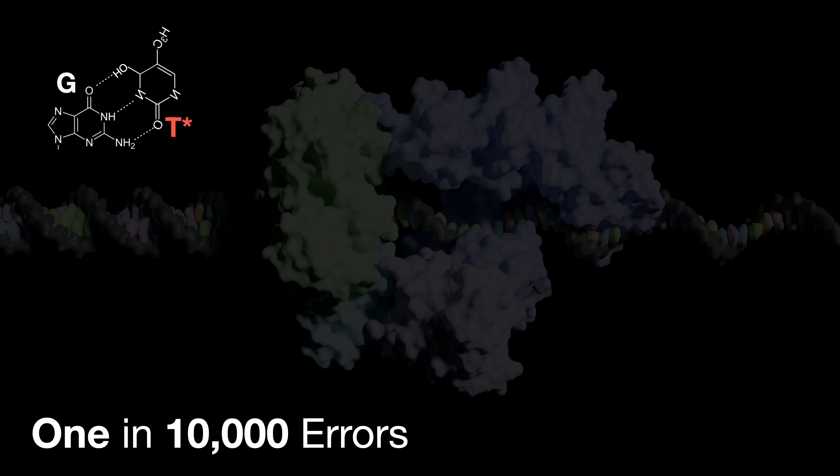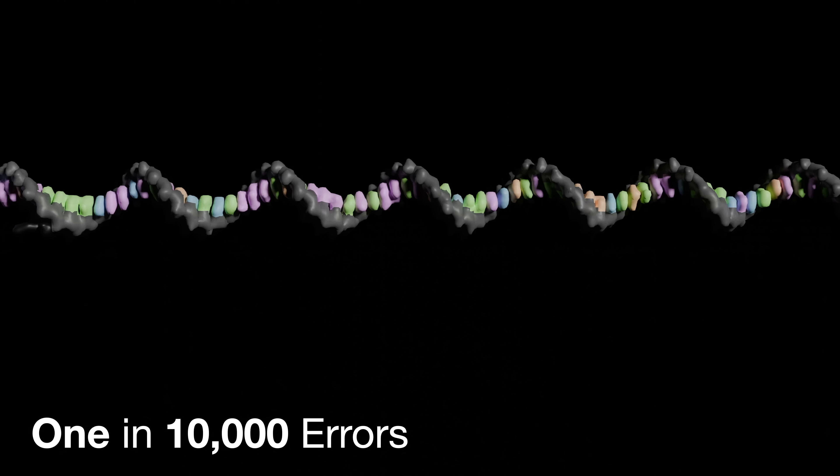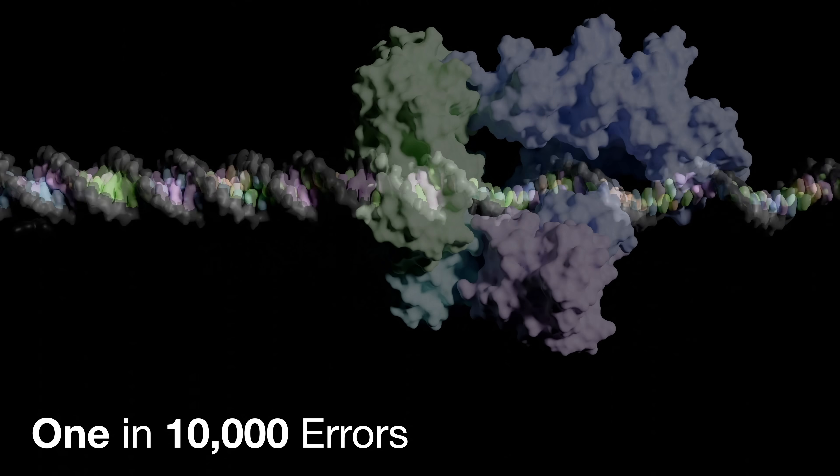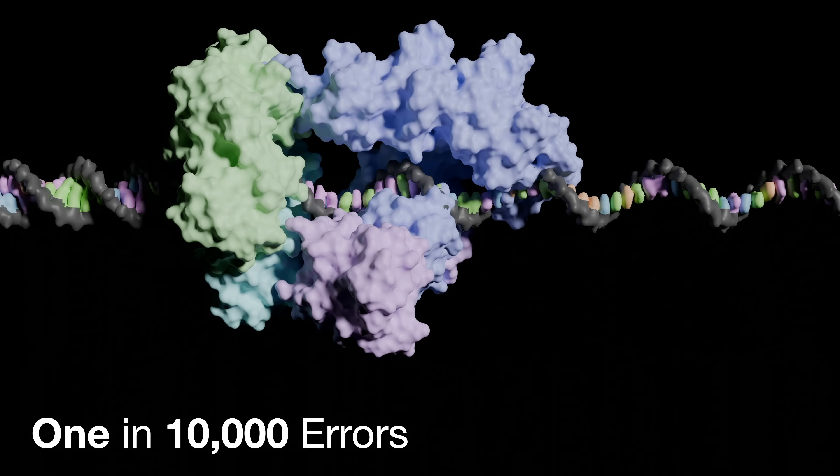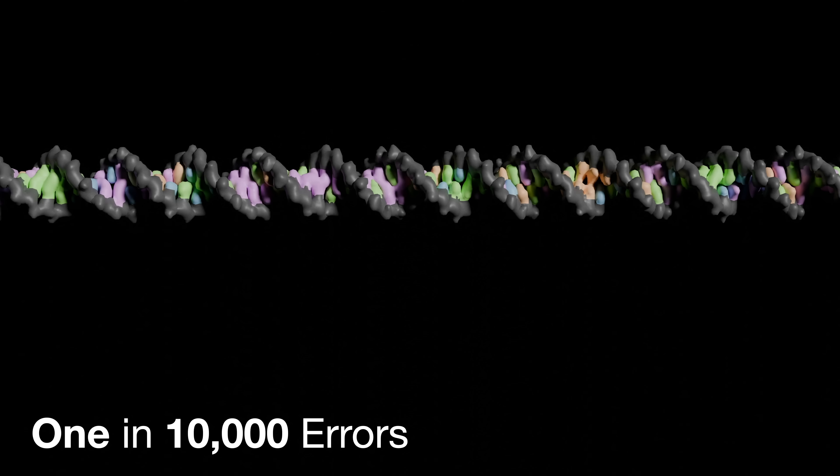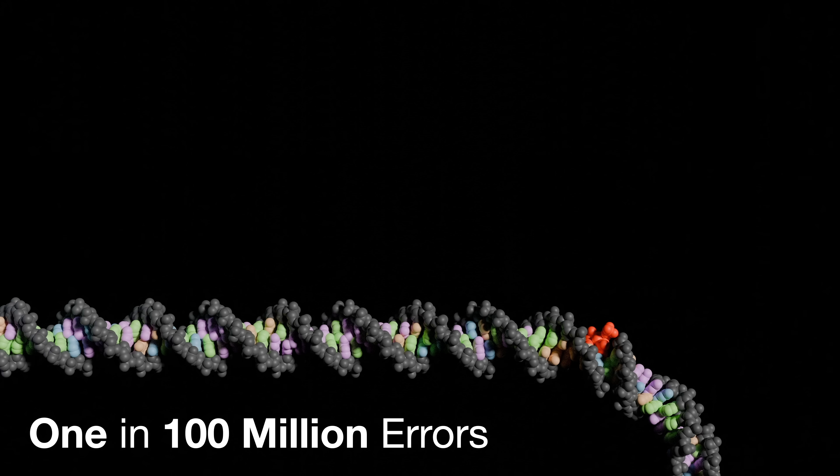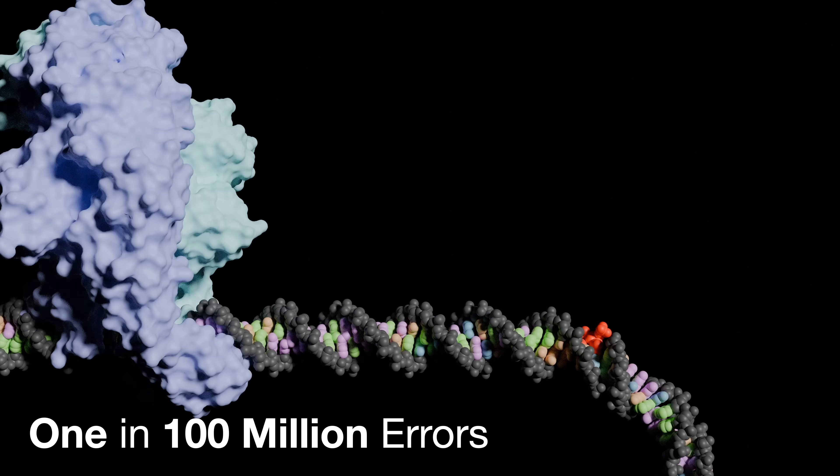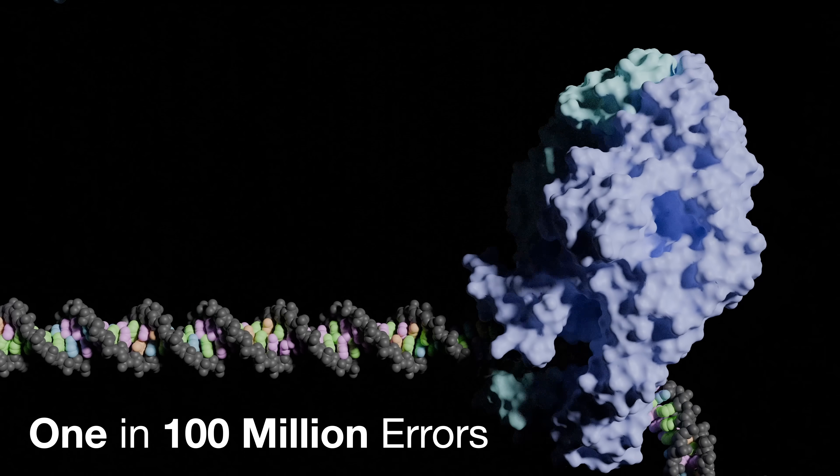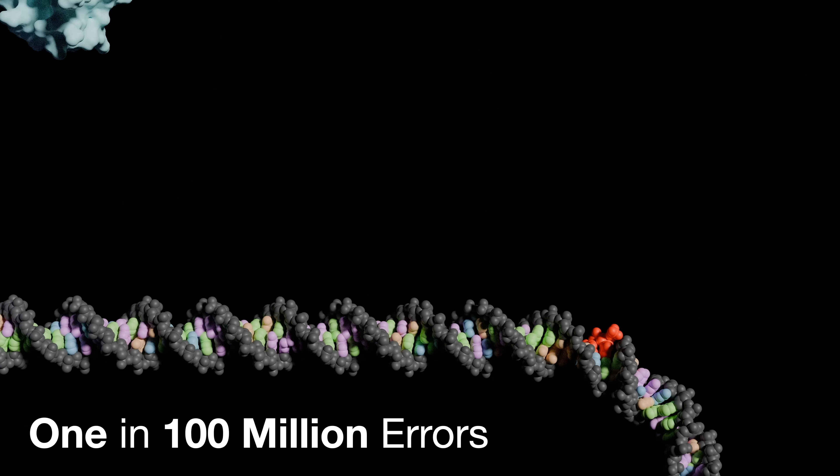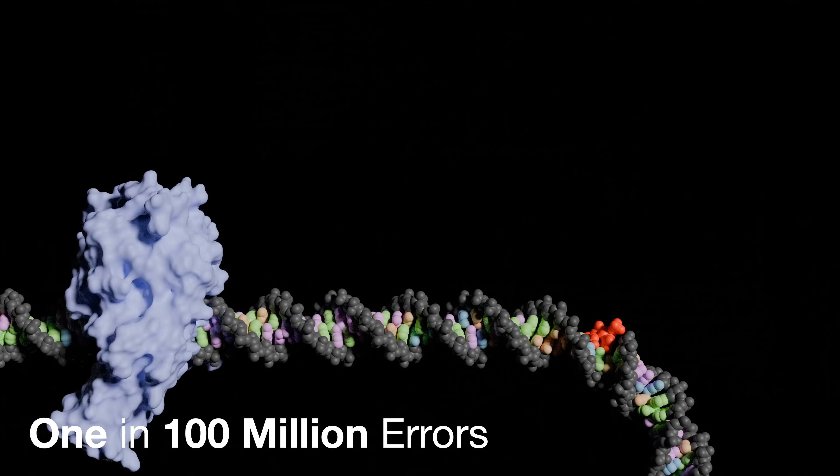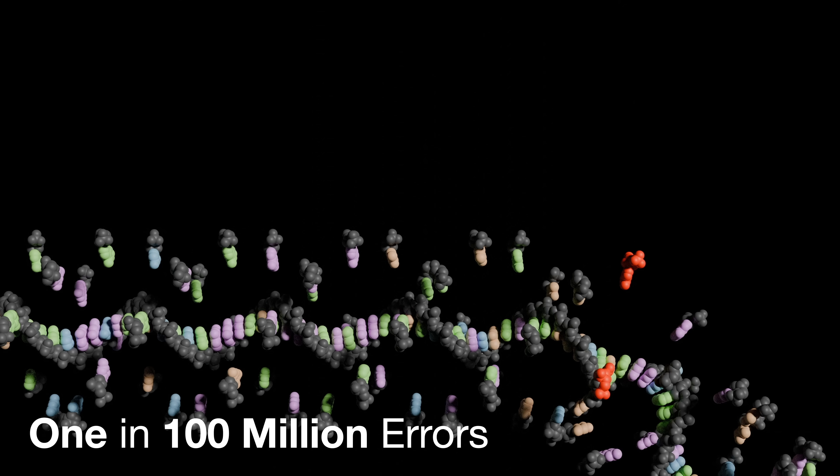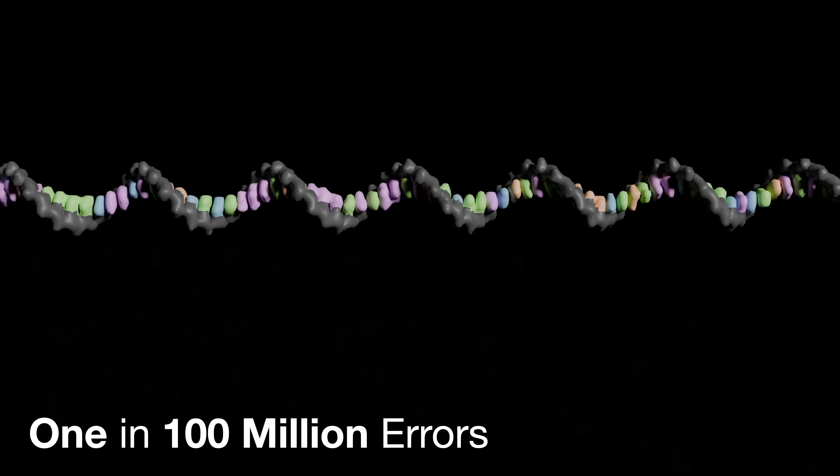This can be dealt with in two ways. The copier itself can pause and chew back this mistake. That brings the error down to, at most, 1 in 100 million. If that fails, another mechanism can detect that mismatch and mow off that entire chunk of DNA and copy it again, bringing our total error down to around 1 in 10 billion.